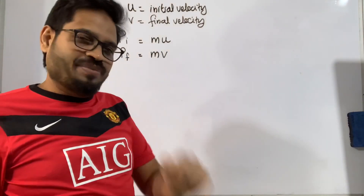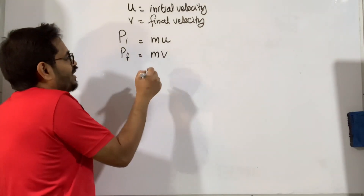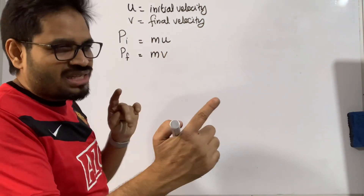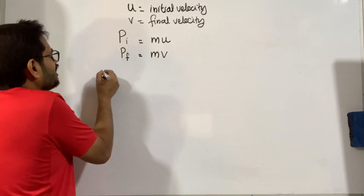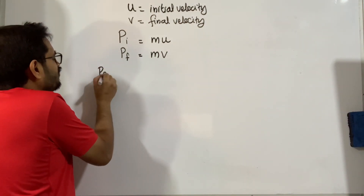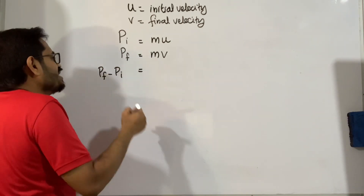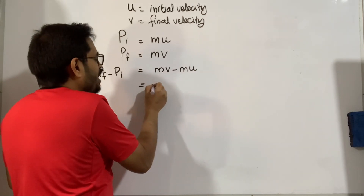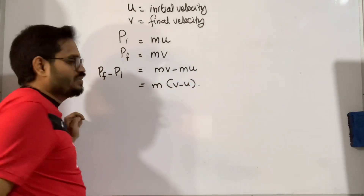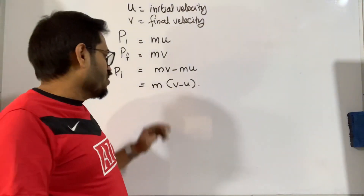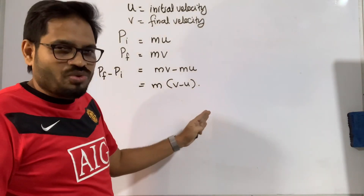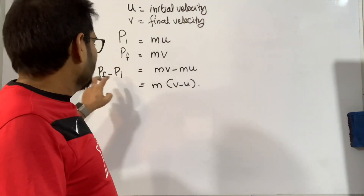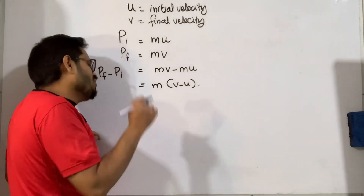Now, the third thing: what is the difference in momentum? The difference in momentum is pf minus pi, which is mv minus mu, and that equals m into (v minus u). This gives us the change in momentum.